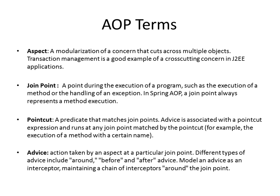A join point is a point during the execution of a program, such as the execution of a method. In Spring AOP, the join point is always a method execution. A pointcut is a predicate that matches join points — like a regular expression that filters out the methods for which the advice needs to be executed. Advice is the behavior or action you want to take by an aspect at a particular join point. For example, you may want to log something before entering a method, or start a transaction when a certain method executes. The pointcut identifies the method for which that advice needs to be applied.